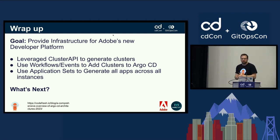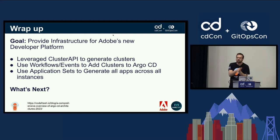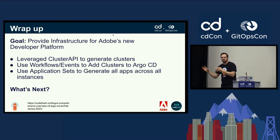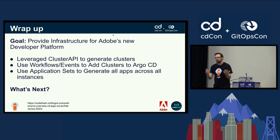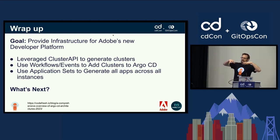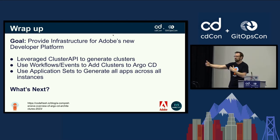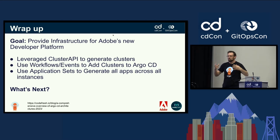To wrap up: the goal was to provide infrastructure for Adobe's new developer platform. We leveraged Cluster API to generate all clusters, used Argo Workflows and Events to trigger those clusters to be added to Argo CD, and used application sets to generate all applications across all instances. App of apps is still leveraged alongside application sets — they're not fighting each other. The infrastructure team manages the baseline for all clusters, end users deploy everything they need, and everybody's doing it in a GitOps, declarative, self-healing way.